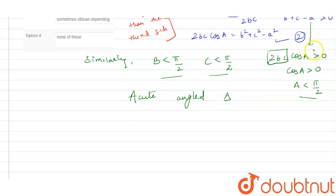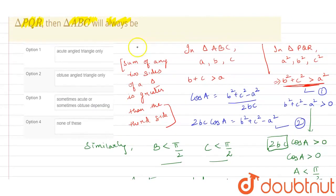Let's match our answer with the given options. Option 1 says acute angled triangle only. Yes, this is the correct option. Option 2 says obtuse angled triangle only, which is not correct. And option 3 is also not correct. And option 4 is also not correct.